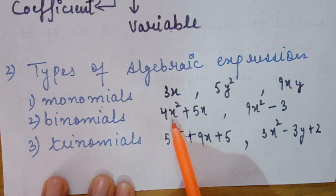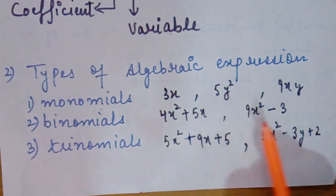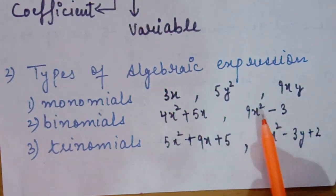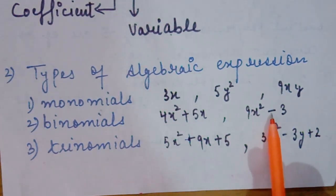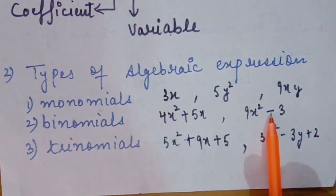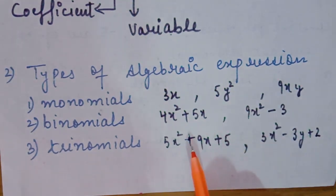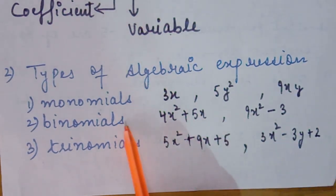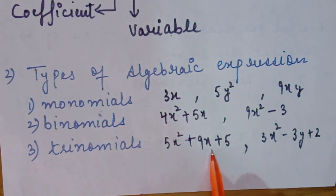The next type is binomial — binomials are those algebraic expressions in which two terms are present, like 4x squared plus 5x. Trinomials are those algebraic expressions in which three terms are present. For example, in 9x squared minus 3, the first term is 9x squared and the second term is 3. So the coefficient of x squared is 9, and the coefficient of x is 0 since x is not present. These are the three types of algebraic expressions based on terms.